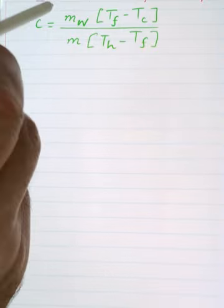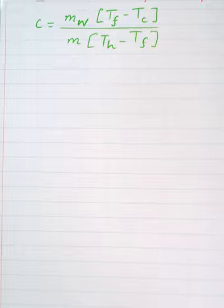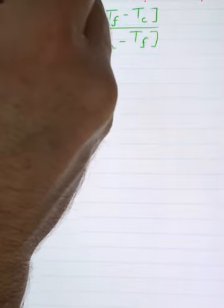So we have this equation for c. Now we are in the lab, so we need to know the error of c. As you can see here, we have division, we have multiplication, and we have subtraction. So the easiest approach for this is to do it in steps.